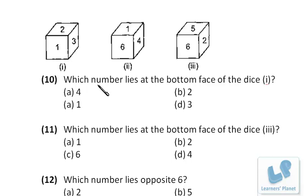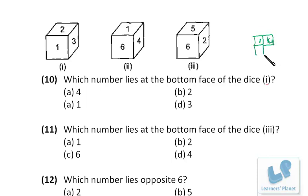Three positions of a single dice are given and there are five questions based on the same diagram. From this figure, when 1 and 2 are talking to each other, 3 is at the right-hand side of 1. Now: opposite to 1 is 5, and which number lies at the bottom of dice 1 — opposite to 2, that's 4.